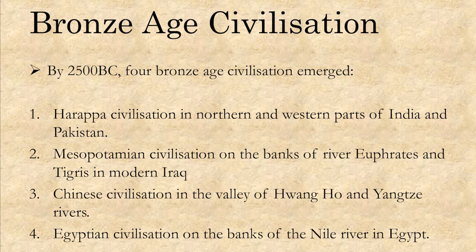As discussed earlier, agriculture made man settle at one place. Settling near a river gave many advantages like availability of abundant water supply for irrigation, transport for carrying goods from one place to another, and fertile soil for better quality of crops and better agriculture.